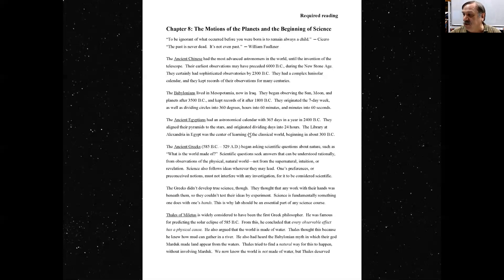The ancient Egyptians had an astronomical calendar with 365 days in a year in 2400 BC. They aligned their pyramids to the stars, originating dividing days into 24 hours. Actually, the Babylonians had originated dividing days into 12 hours. It wasn't until 1,000 years later that the ancient Egyptians realized that time passes at night, too. So 24 hours in a day-night cycle on the average. The library in Alexandria in Egypt was the center of learning of the classical world, beginning at about 300 BC.